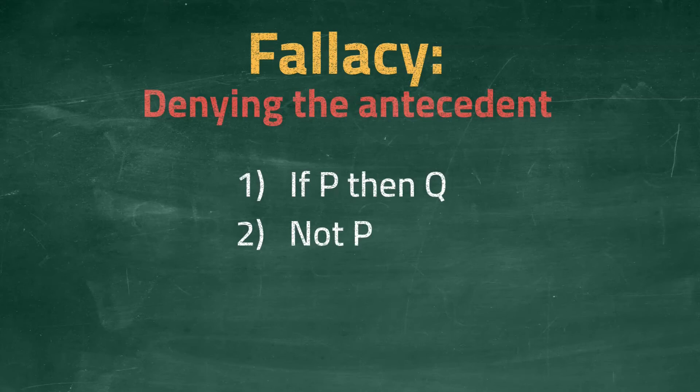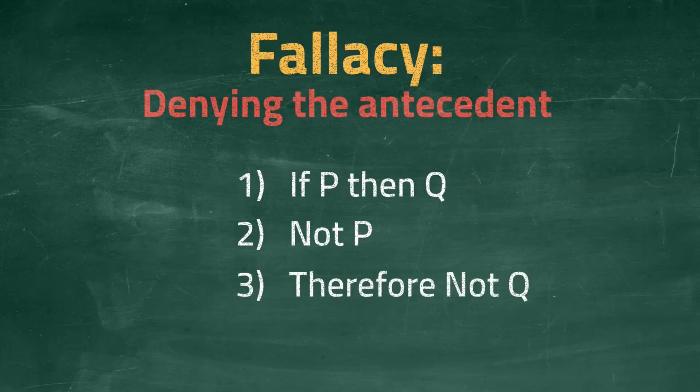The second premise. Not P. P is false. Again, we assume this is correct, and move on to the final statement. The conclusion. Therefore, not Q. In other words, we conclude that Q is false.